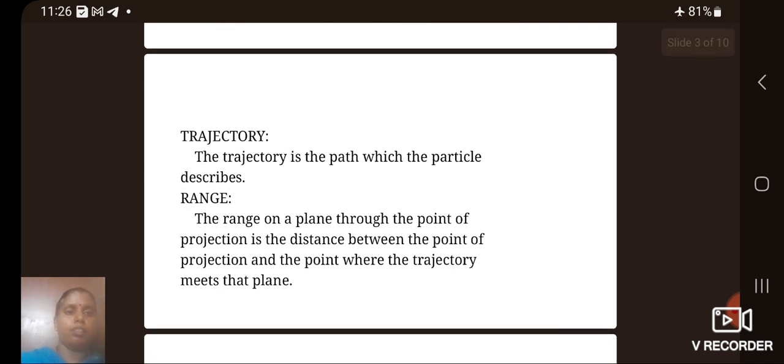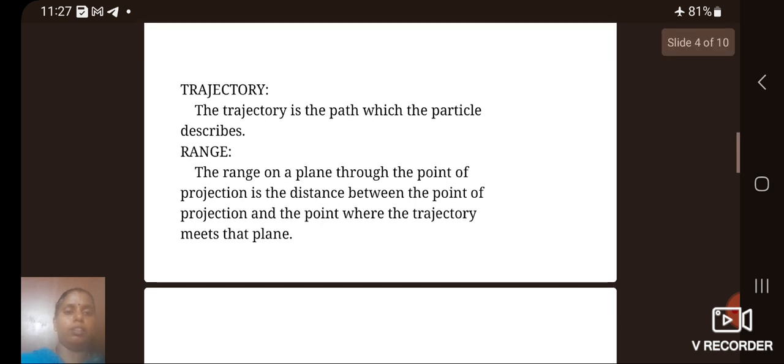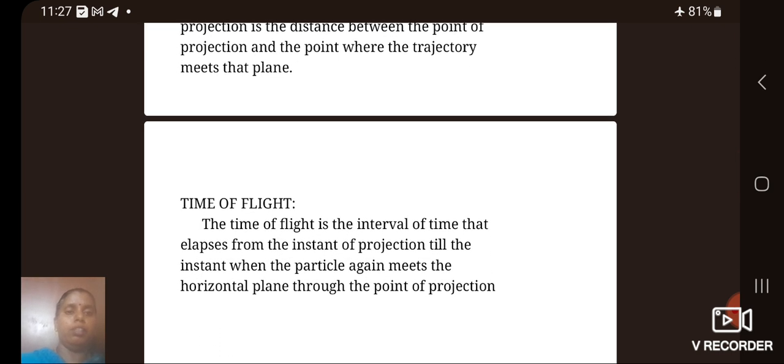Then next one is trajectory. The trajectory is the path which the particle describes. The range on a plane through the point of projection is the distance between the point of projection and the point where the trajectory meets that plane. Then next we see the definition of time of flight.